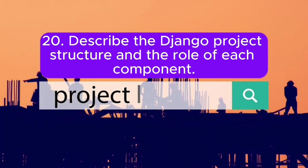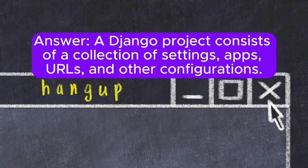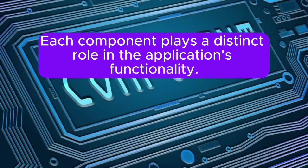Question 20: Describe the Django project structure and the role of each component. Answer: A Django project consists of a collection of settings, apps, URLs, and other configurations. Each component plays a distinct role in the application's functionality.